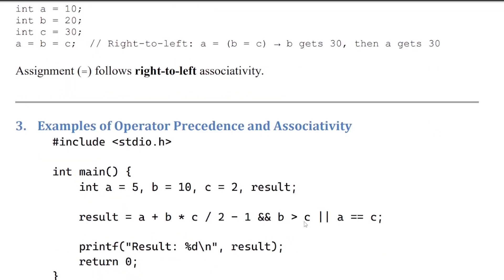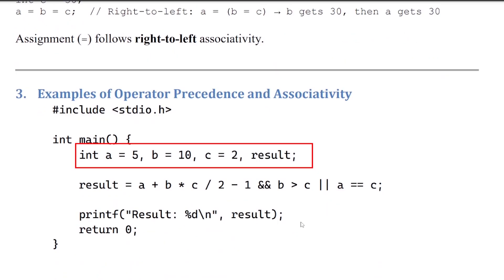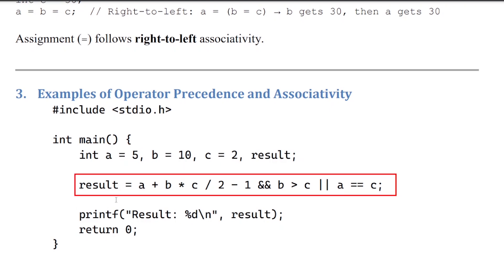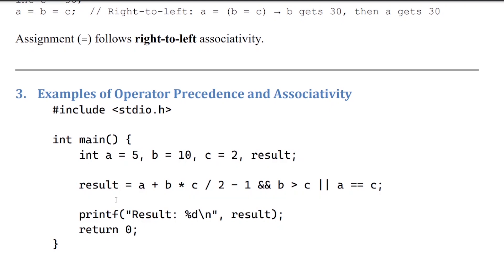Next example: A = 5, B = 10, C = 2. The expression is: result = A + B * C / 2 - 1 && B > C || A == C. This expression contains different operators, and we need to find the value of result.